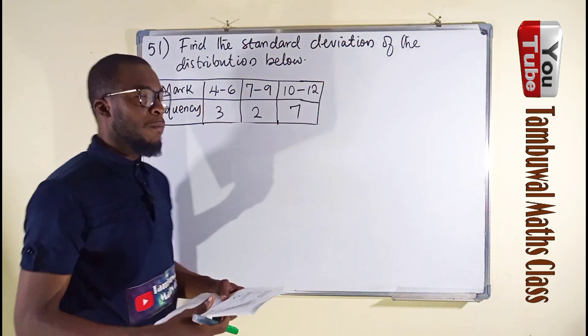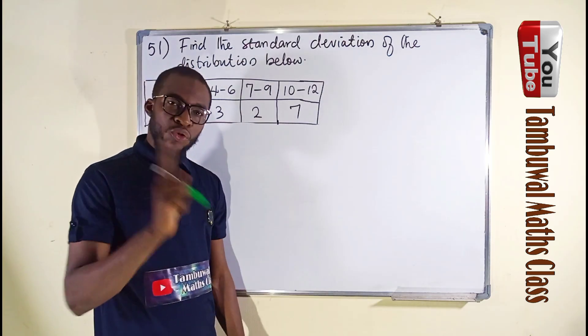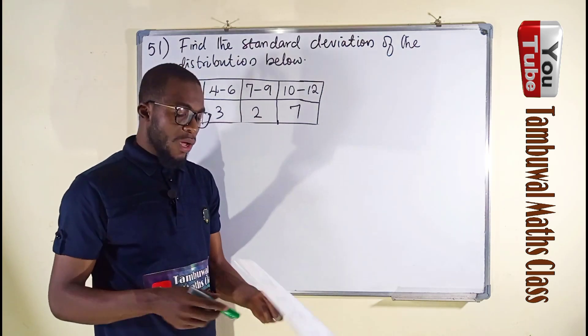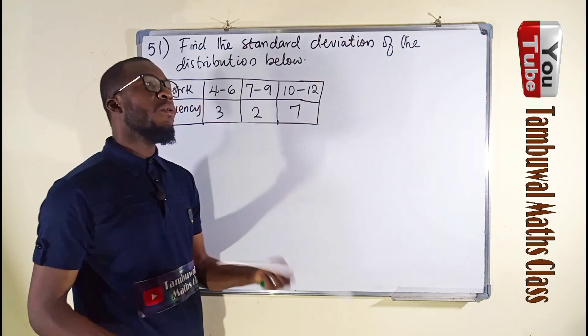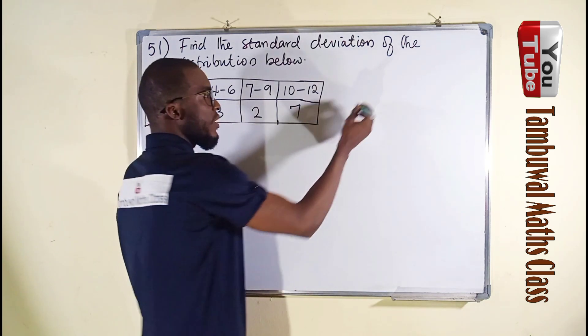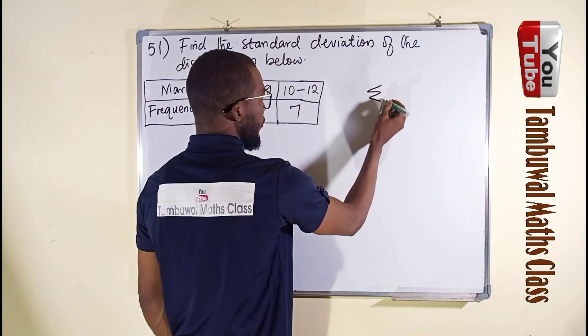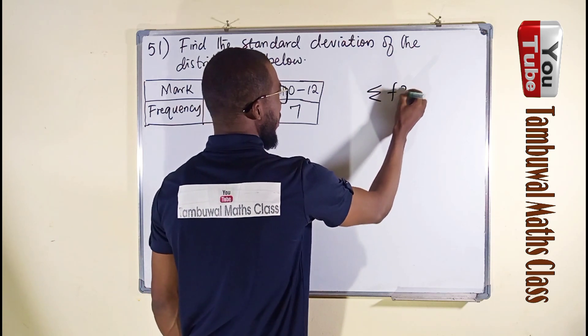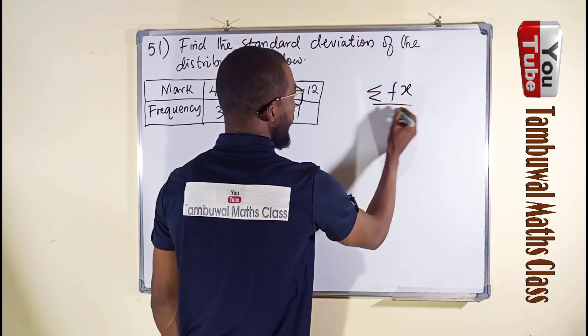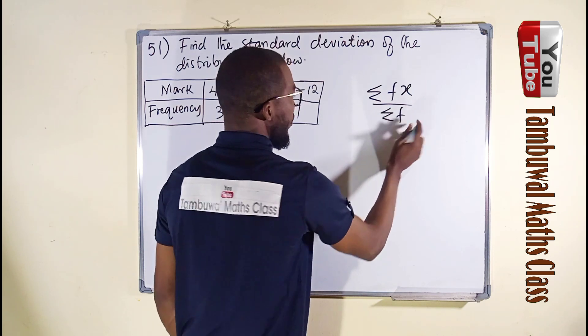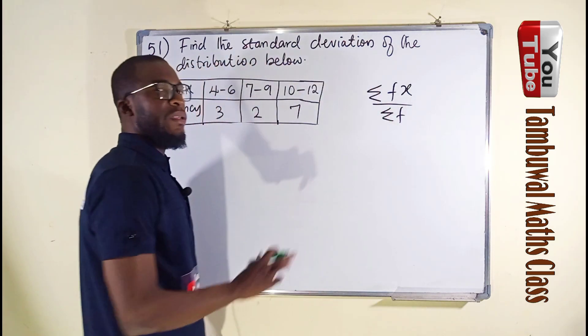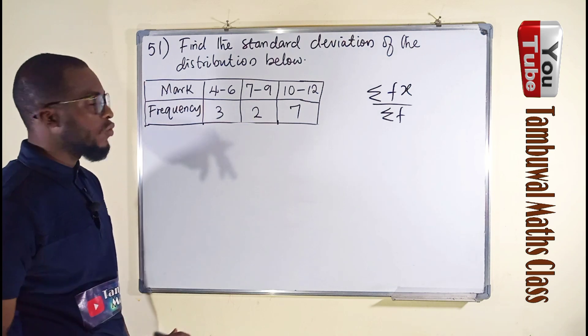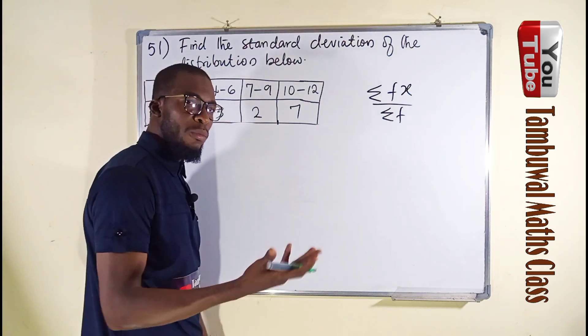We are asked to find the standard deviation. There is no way you can find the standard deviation without finding the mean. And how can we find the mean? We are going to take the summation of all the frequency times x divided by the sum of the frequency, which is denoted by capital sigma, stands for summation, sum of all.